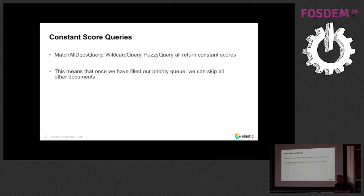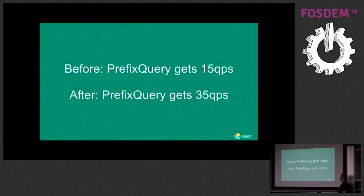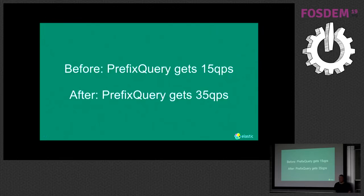Wildcards and fuzzy queries tend to get rewritten to constant score queries, because when you're expanding a wildcard or fuzzy query to all the different terms, it's not obvious how you would otherwise combine the term frequencies of all those matches. So we replace it with a constant score query. Wildcard query, fuzzy query, prefix query, and general disjunction queries can all use this mechanism as well. Prefix query, for example, jumped from 15 to 35 queries per second. The reason it's not as big a gain as term query is that for prefix queries, about half the query time is spent doing the expansion rather than collecting documents.